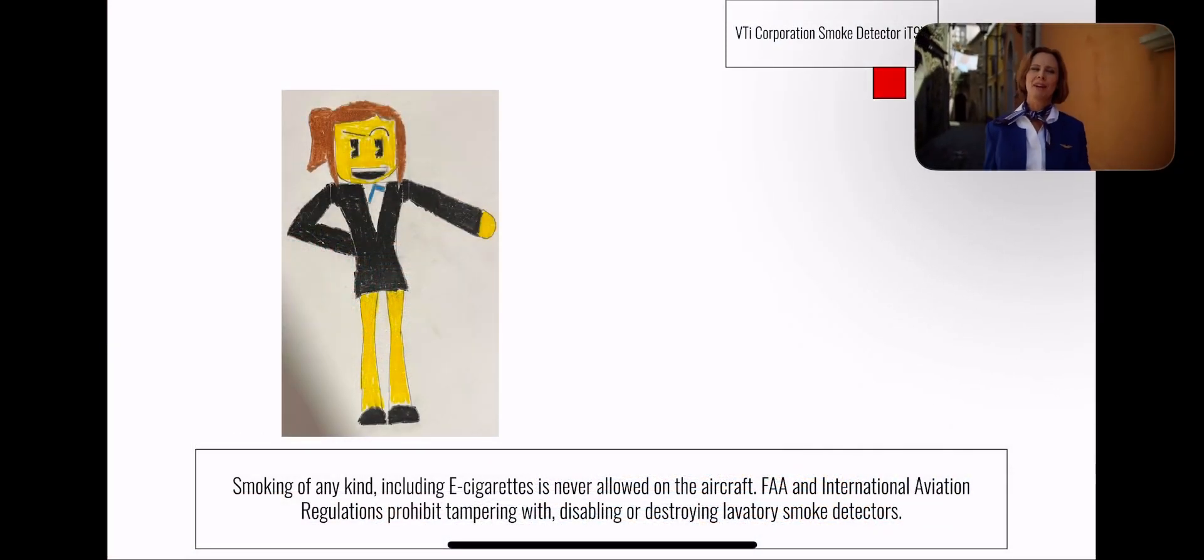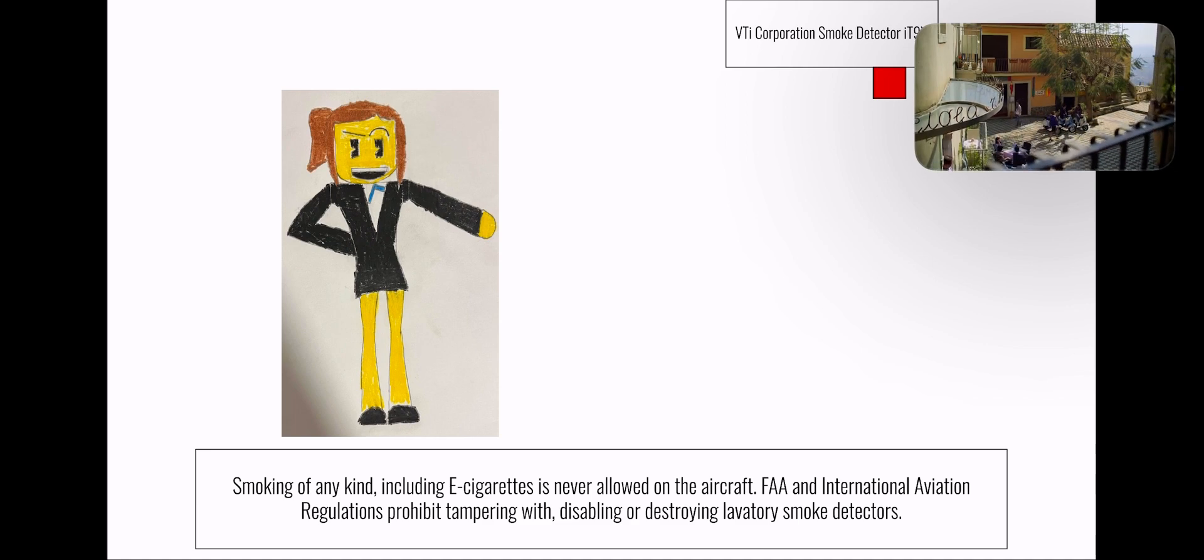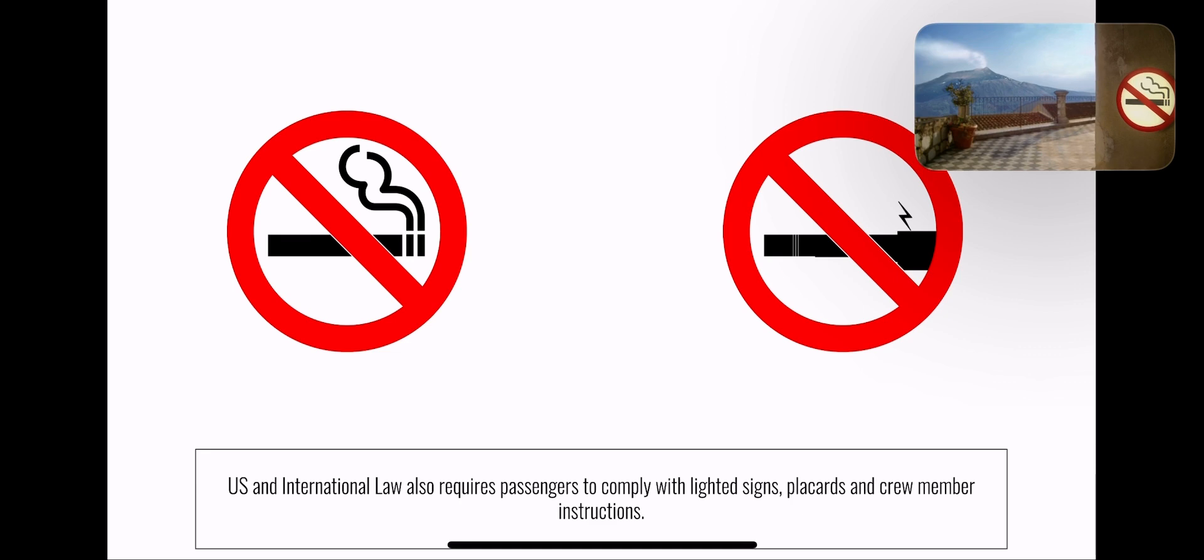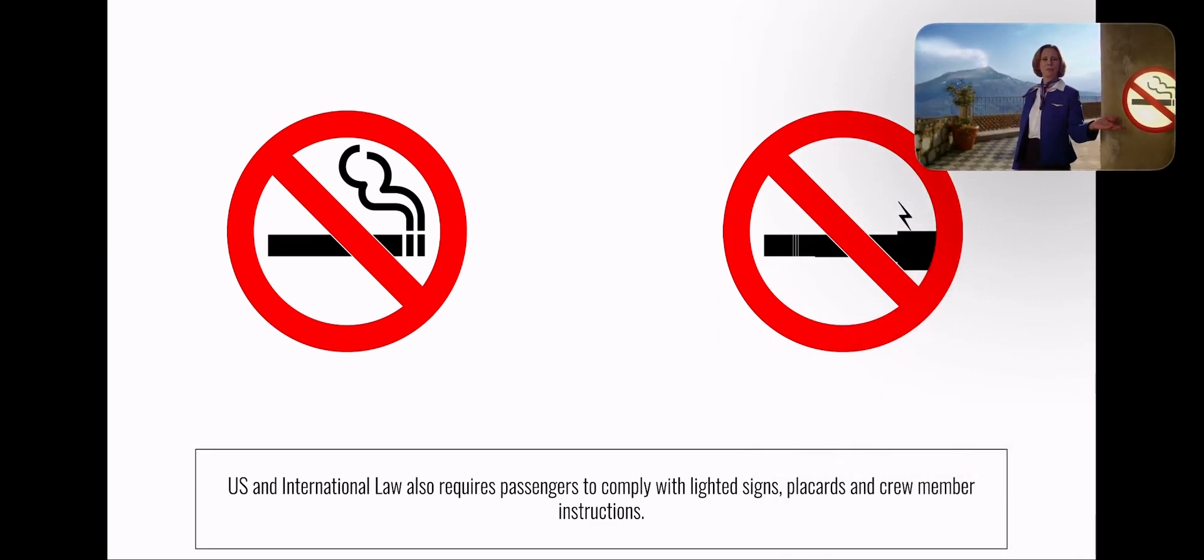Smoking is never allowed on the aircraft. U.S. law prohibits tampering with, disabling, or destroying lavatory smoke detectors. Federal regulations also require passengers to comply with lighted signs and crew member instructions.